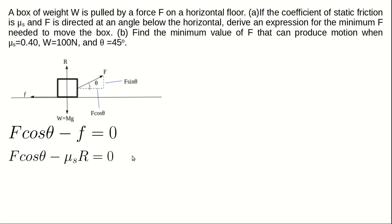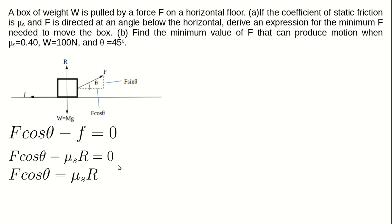Rearranging the x-axis equation gives F cosθ = μsR. For the y-axis, since the force is directed below the horizontal, F sinθ acts downward. So the y-axis equation becomes: R equals mg plus F sinθ, or equivalently R plus F sinθ downward equals W, giving R = W minus F sinθ.